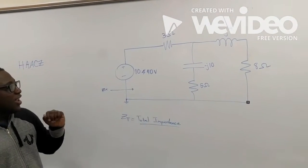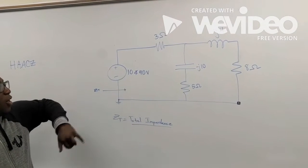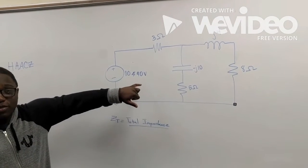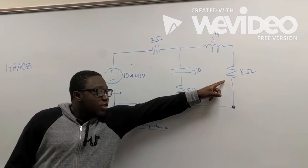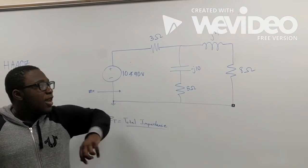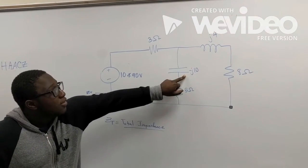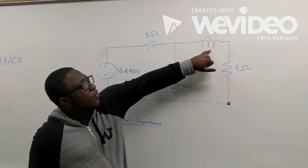This is our circuit, a beautifully drawn AC circuit with a 10 angle 40 volt source, a 3 ohm resistor, an 8 ohm resistor, a 5 ohm resistor, and a negative J10 capacitor, along with a J4 inductor.